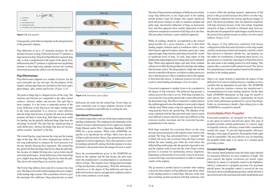This procedure facilitates a more stabilized approach. While all landings should be accomplished at the slowest speed possible for a given situation, a soft or short field landing requires minimal speed at touchdown, while a short field obstacle approach requires minimum speed and a steep approach angle. Flap extension, particularly beyond 30 degrees, results in significant levels of drag, requiring higher power settings than used with partial flaps. When steep approach angles and short fields combine with power to offset the drag produced by the flaps, the landing flare becomes critical. The drag produces a high sink rate that must be controlled with power; yet failure to reduce power at a rate so that power is idle at touchdown allows the airplane to float down the runway. A reduction in power too early can result in a hard landing and damage or loss of control.